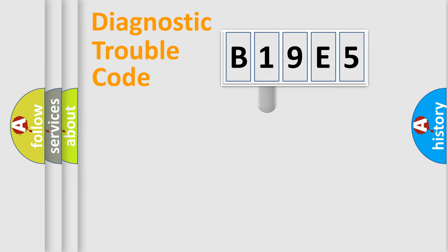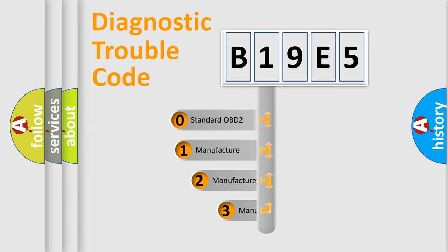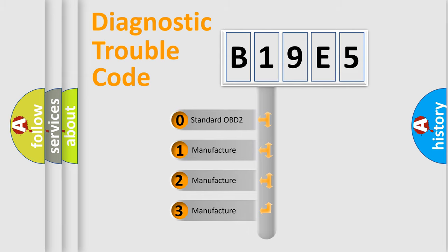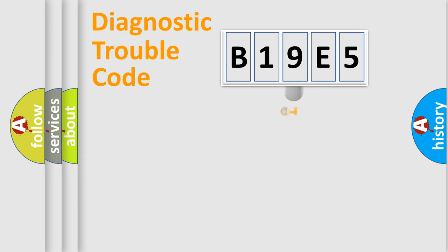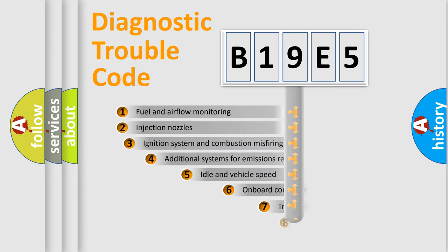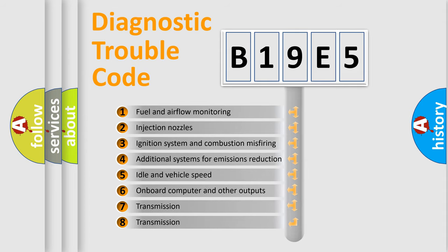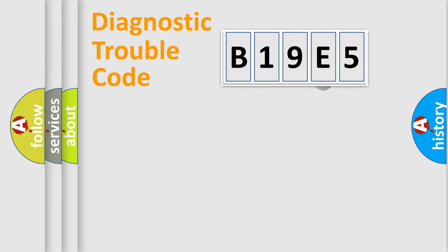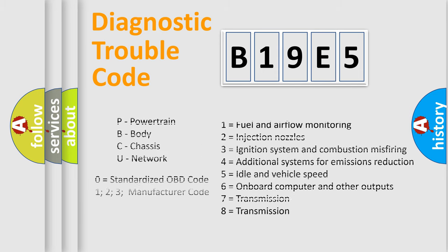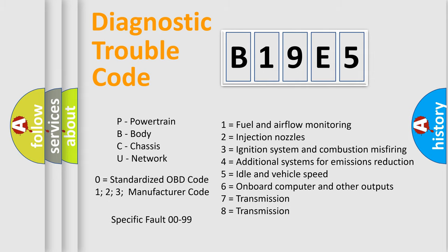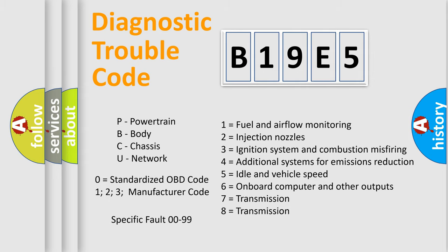This distribution is defined in the first character of the code. If the second character is expressed as zero, it is a standardized error. In the case of numbers 1, 2, or 3, it is a more specific expression of a car-specific error. The third character specifies a subset of errors, and only the last two characters define the specific fault of the group. This division is valid only if the second character is expressed by the number zero.